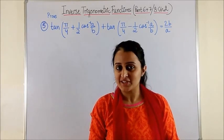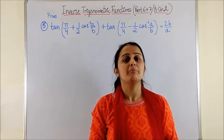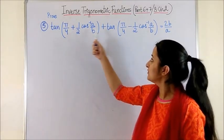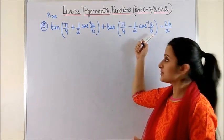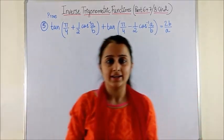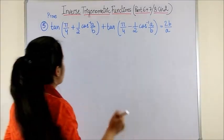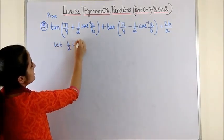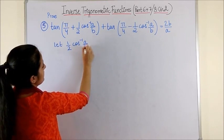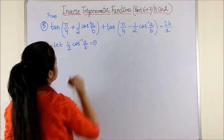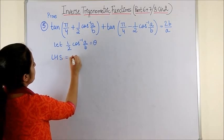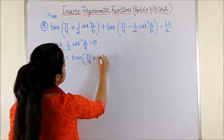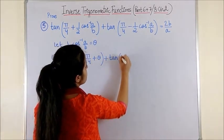Those four were just the starters — let's see what the main course has for us. We have to prove that when these two expressions are added they give us 2b/a. We can assume at the beginning that ½cos⁻¹(a/b) = θ. So the LHS becomes tan(π/4 + θ) + tan(π/4 − θ).